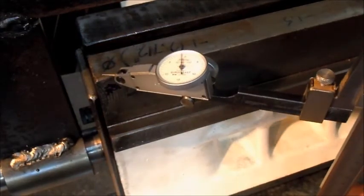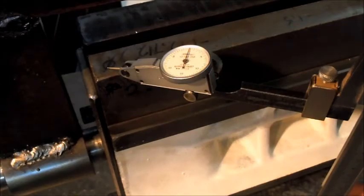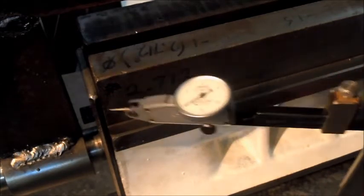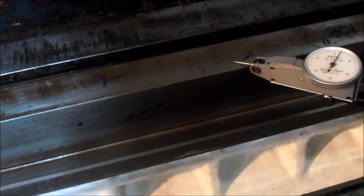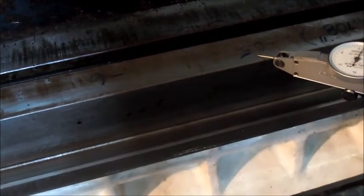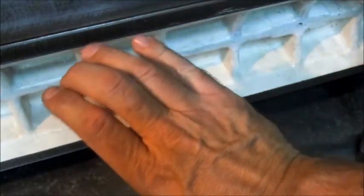So that's zero there, so it's zero here at this end. So the two ends are good. Problem is this center here on this side is high, so that means the whole table has a bow in it that way.